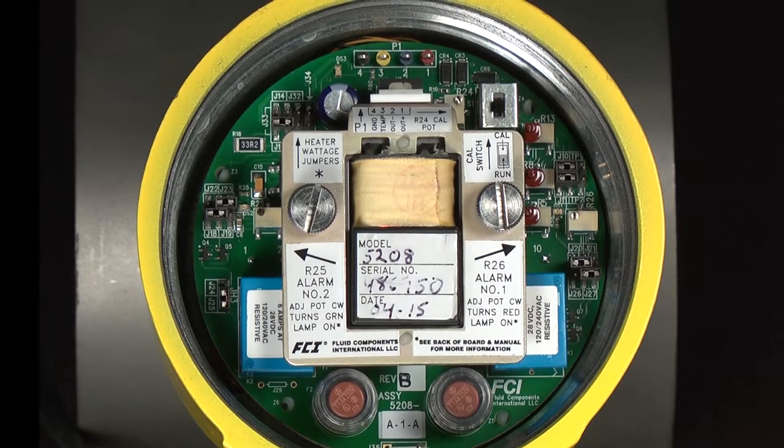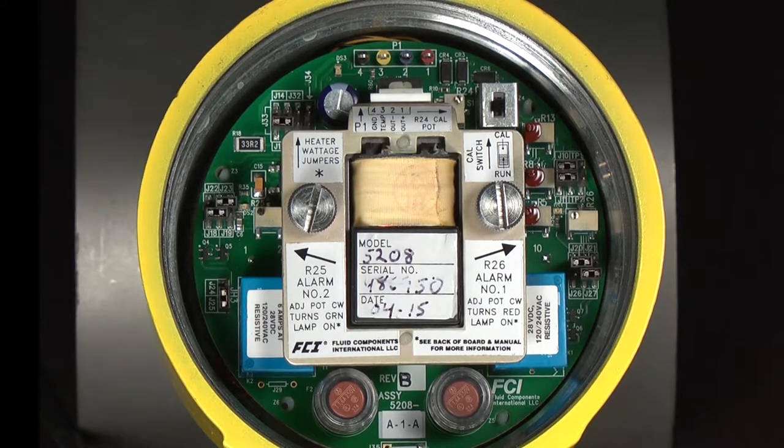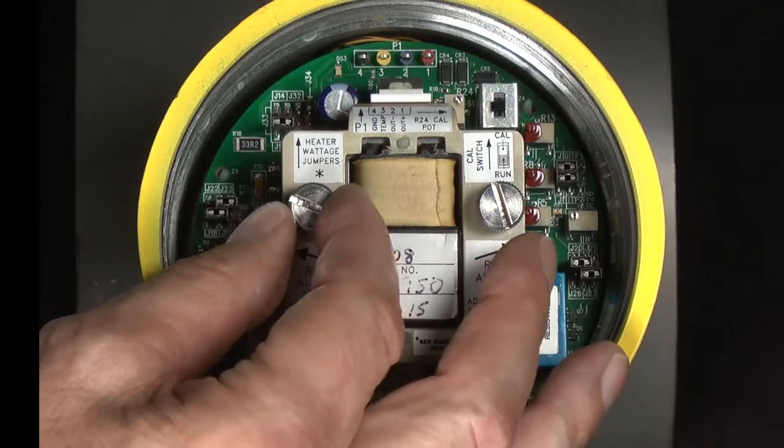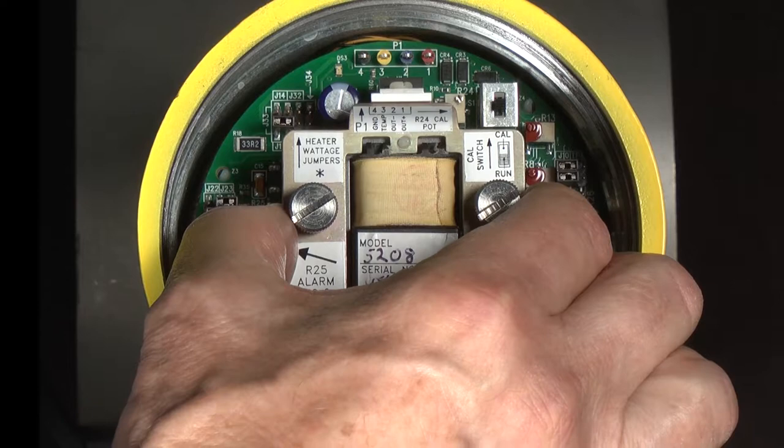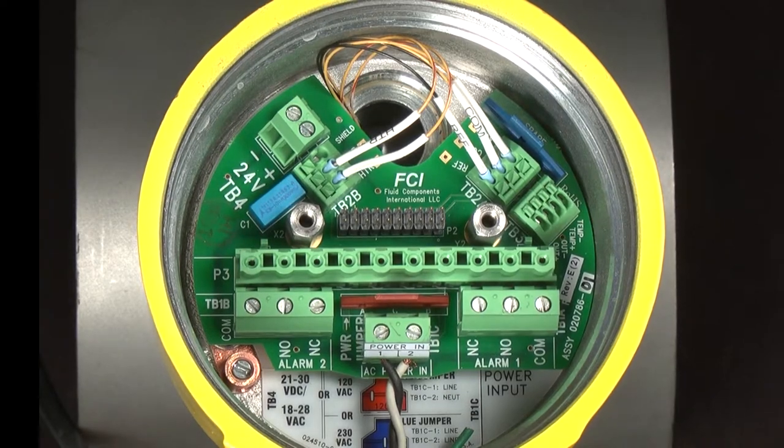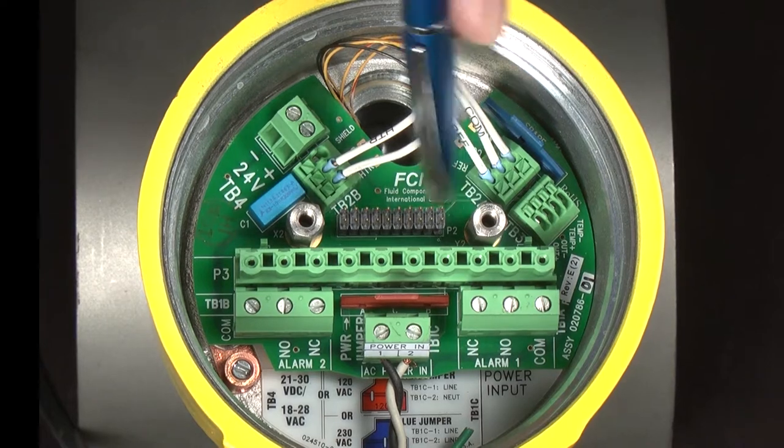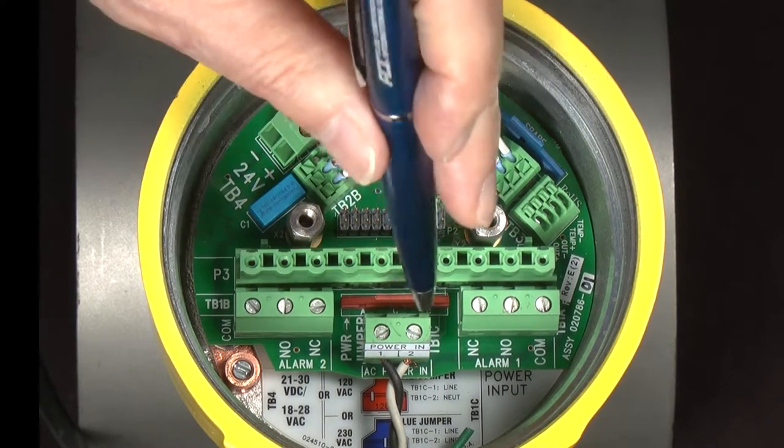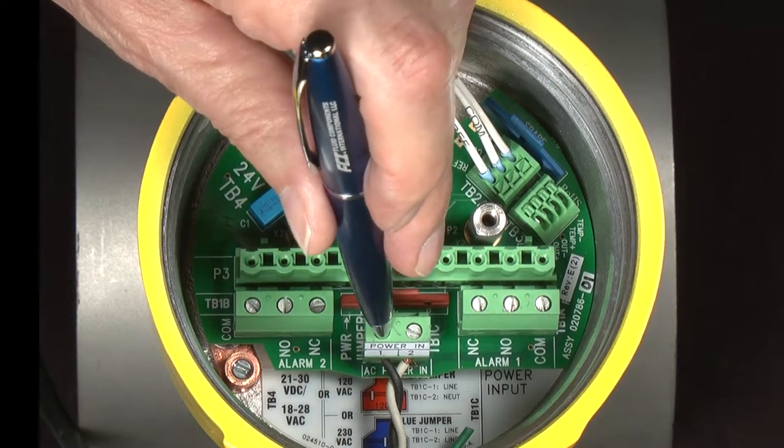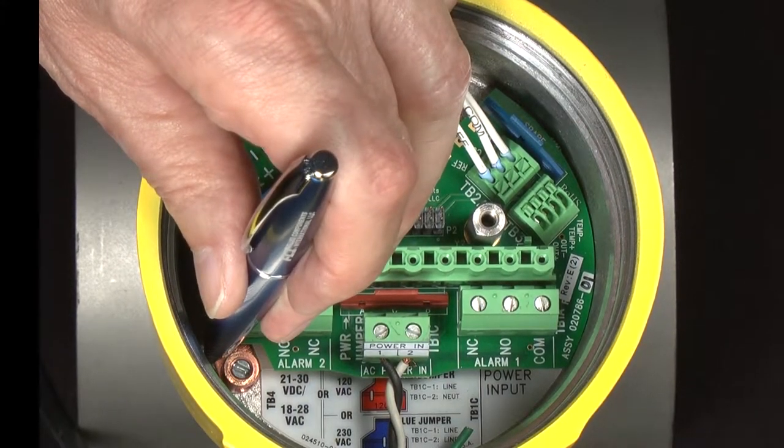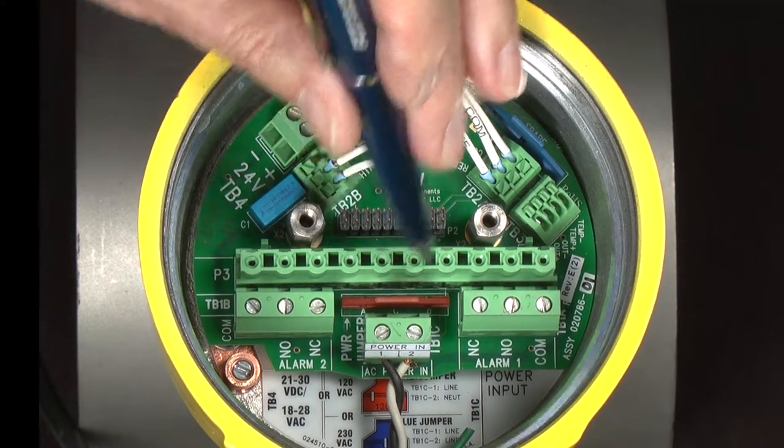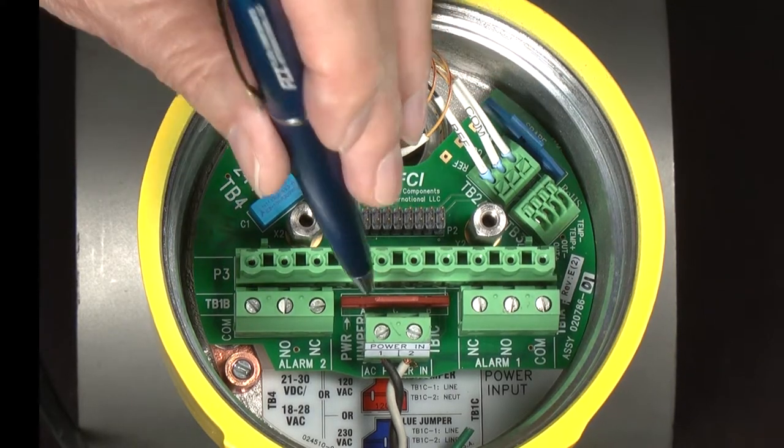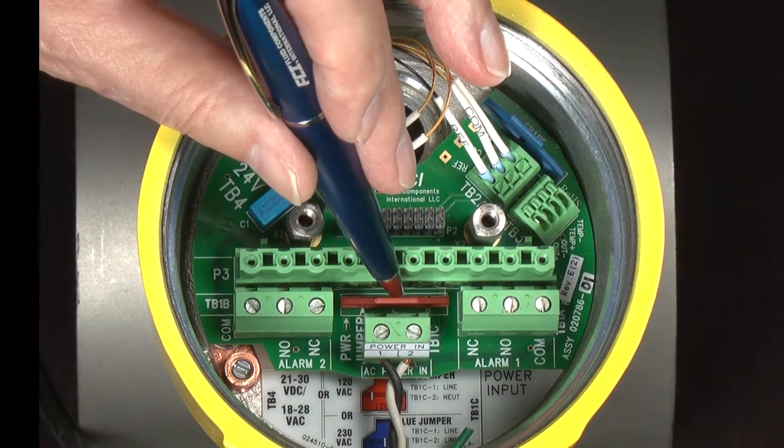Now let's take a closer look at the 5208 circuit board. The 5208 circuit board has a top and bottom board. The top board is connected to the bottom board by these two screws; you loosen them up, and you grab the top board by the transformer, pull it straight out. Make sure the power is off first. The bottom board is connected to the enclosure by these two hex nuts. You connect your power to the TB1C connection here, and your ground to this lug that's attached to the enclosure over here. There are two jumpers, a red jumper and a blue jumper. The red jumper is for 120 volt AC, the blue jumper is for 230 volt AC.